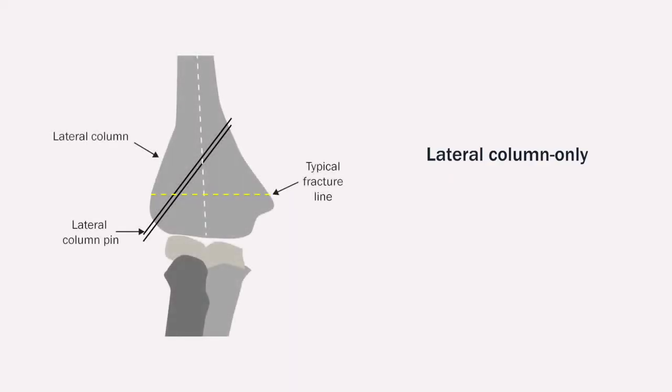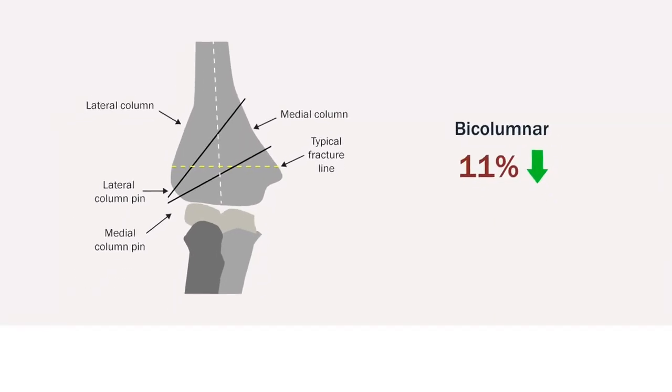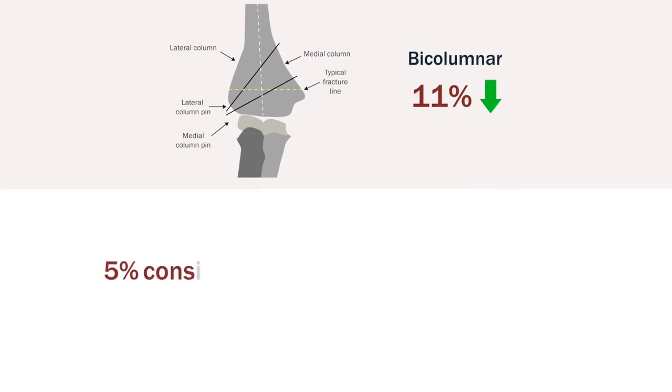When lateral column-only fixation was used, the malunion rate was an alarming 36%, but when bicolumnar fixation was used, the malunion rate dropped to 11%. The team also found that 5% of cases were suggestive of non-accidental trauma, consistent with child abuse.